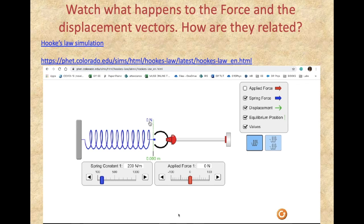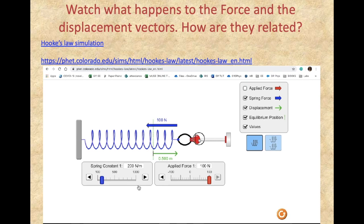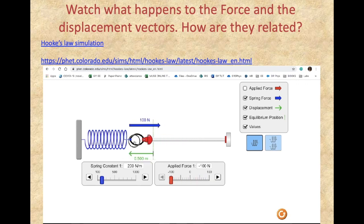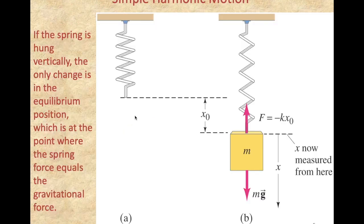At the equilibrium position, which we call x equals zero, the force is zero and the displacement is zero. With the clamp you apply a force in one direction, the spring pulls back; as you pass to the other side, the spring will push back. Pulling to the right, the spring pulls me to the left. Moving to the left of equilibrium, the spring pushes me to the right.